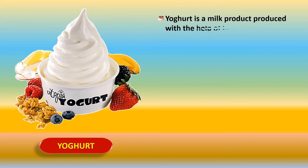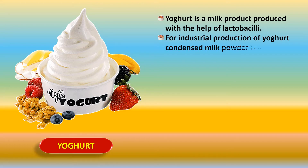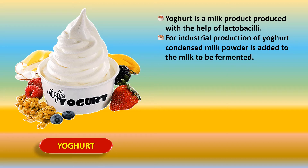Yogurt is a milk product produced with the help of the bacteria called lactobacilli. For industrial production of yogurt, condensed milk powder is added to the milk to be fermented. At home we just heat milk, cool it, add a little yogurt from before, and get new curds. But when making it in very large quantities in industries, condensed milk powder is added to the milk that is to be fermented.